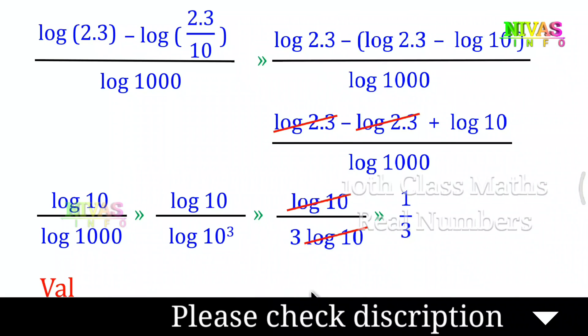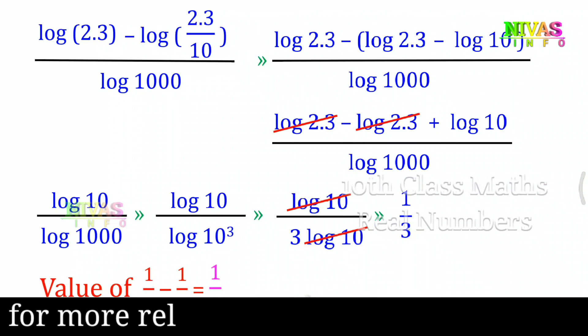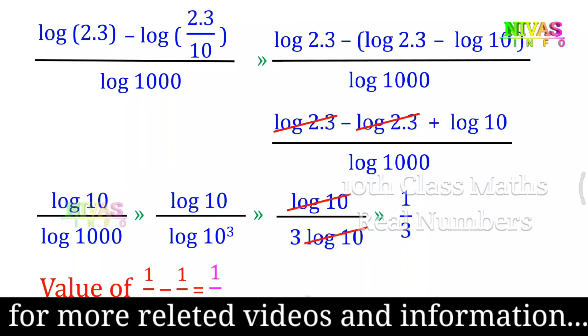So the value of 1 by x minus 1 by y is equal to 1 by 3.